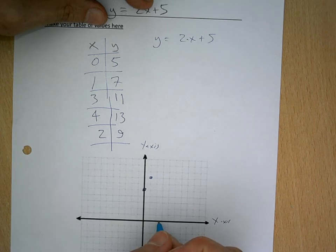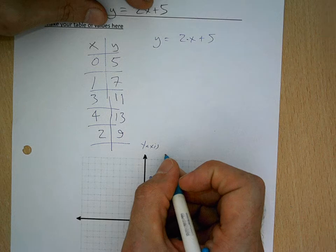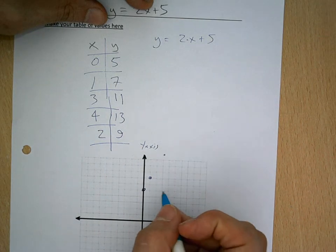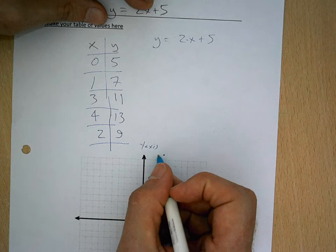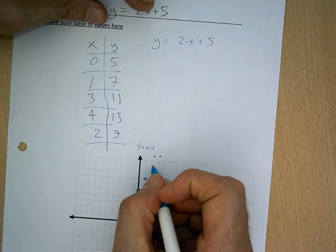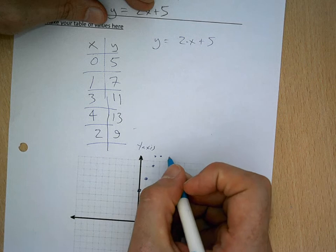1, 7 is here. 3, 11 is up there. 4, 13 is... Sorry, 3, 11 is here. 2, 9. Sorry, 3, 11 and 4, 13.